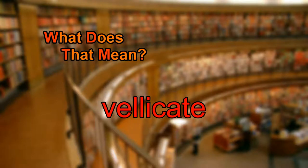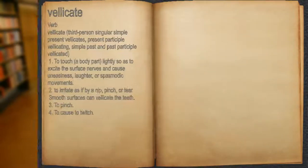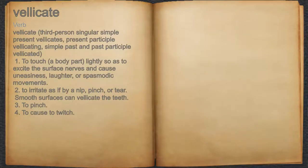What does velicate mean? Velicate. Verb. 1. To touch a body part lightly so as to excite the surface nerves and cause uneasiness, laughter, or spasmodic movements.